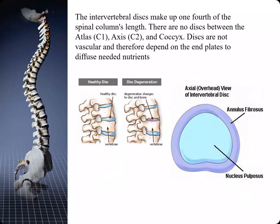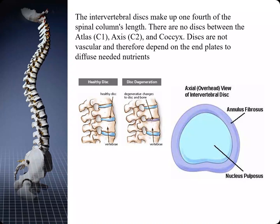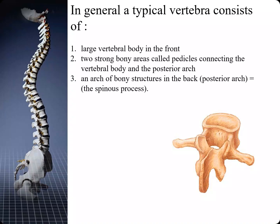The intervertebral discs make up one-fourth of the spinal column's total length. As we get older they get smaller, so we shrink in size. There are no discs between the atlas and axis C1 and C2, and the coccyx. The discs are made up of the annulus fibrosus and the nucleus pulposus. The discs are not vascular and depend on the end plates of the bones to provide nutrients. A typical spinal vertebra consists of a large vertebral body in the front, two strong bony areas called pedicles, and the arch of bony structures in the back called the spinous process, made up of the formation of the two laminae.